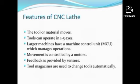Features of CNC lathe: the tool or material moves. Tools can be operated on one to five axes. Laser machines have a machine tool control unit. Movement is controlled by a motor. Feedback is provided by a sensor. Tool magazines are used to change tools automatically.